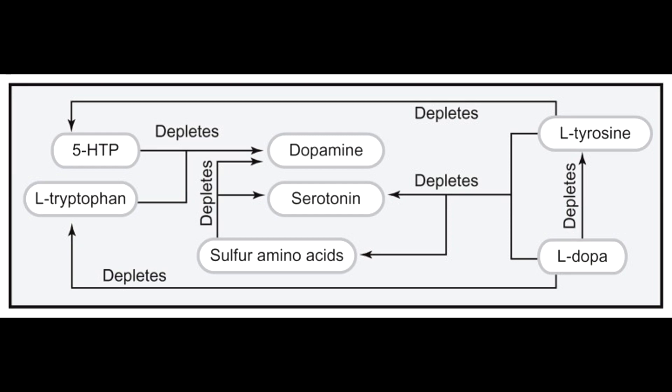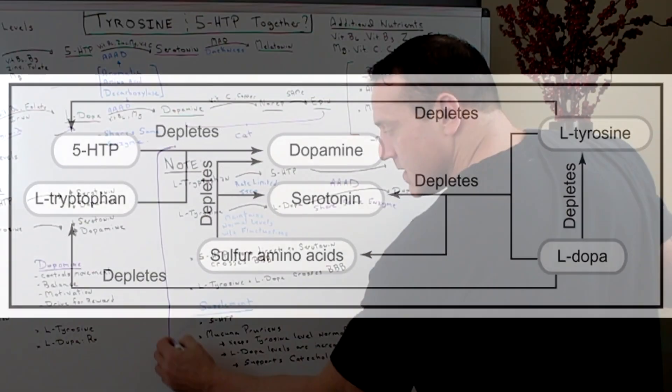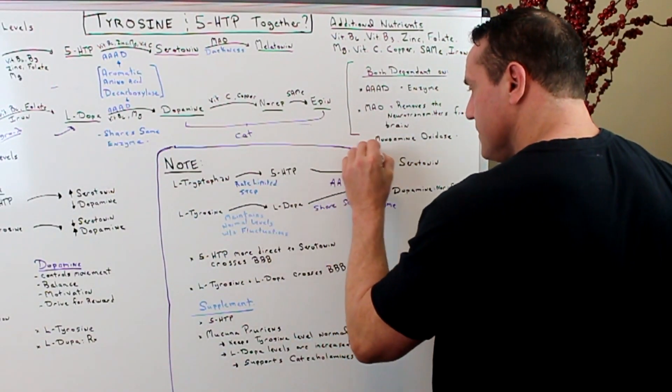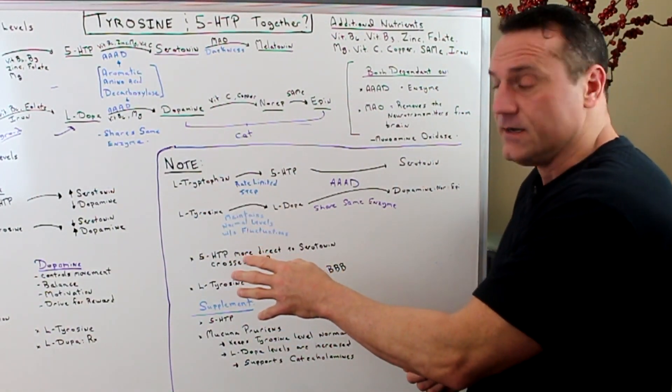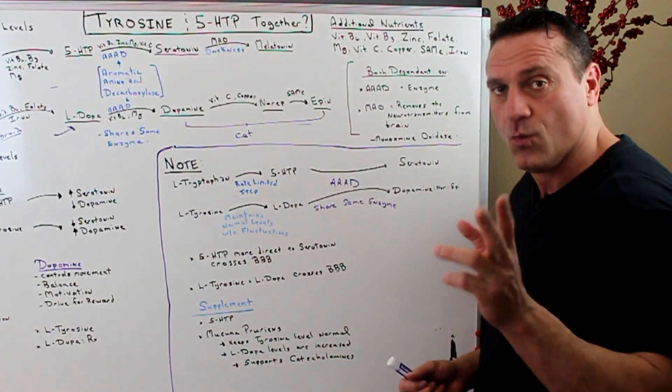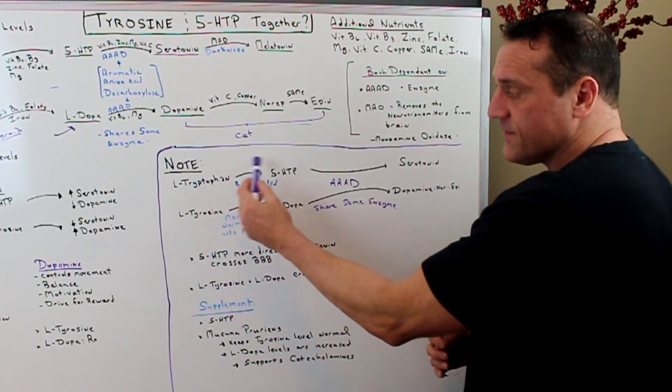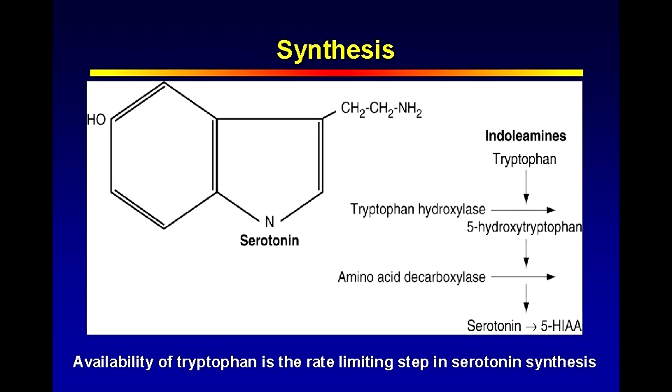The reason being is, I just want you to focus on this right here, because when you take in L-tryptophan or L-tyrosine, there's a couple of things that happen. One, the conversion of L-tryptophan to 5-HTP has a rate-limiting step.